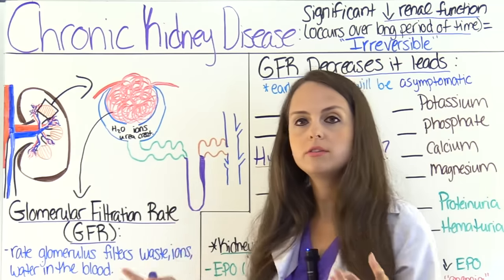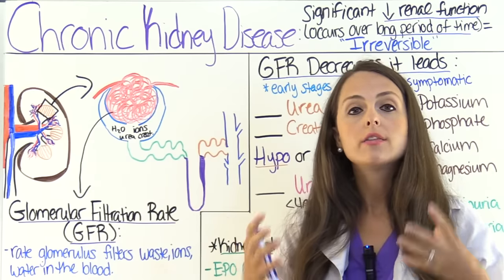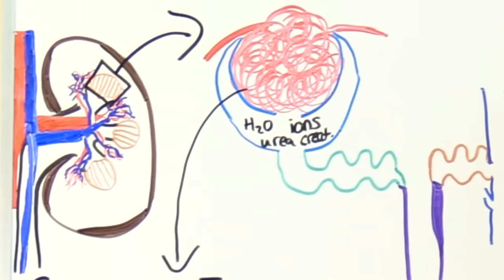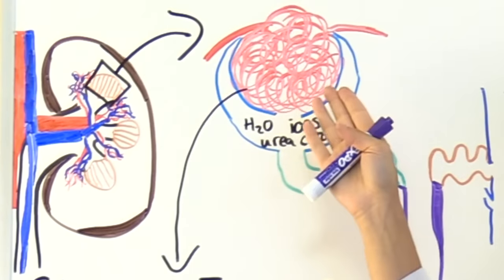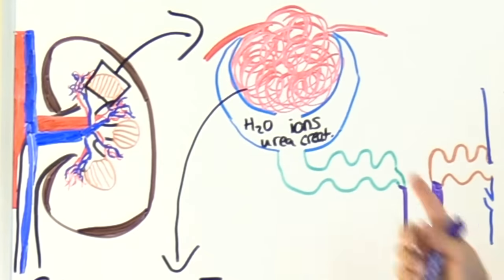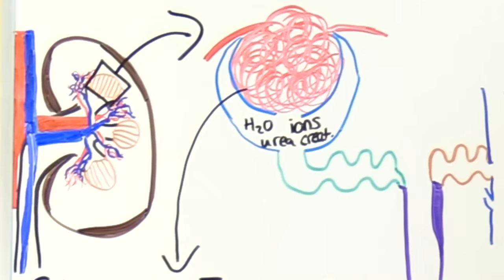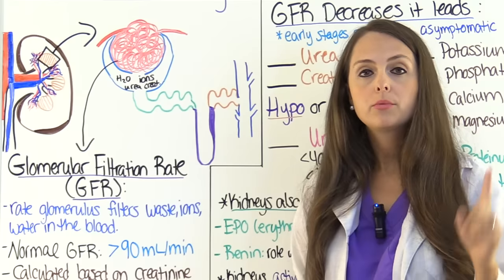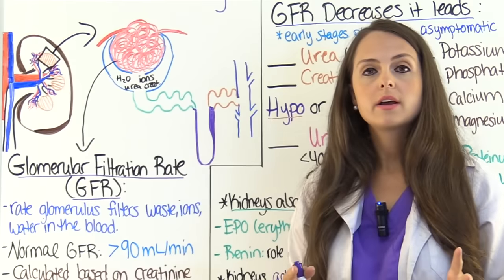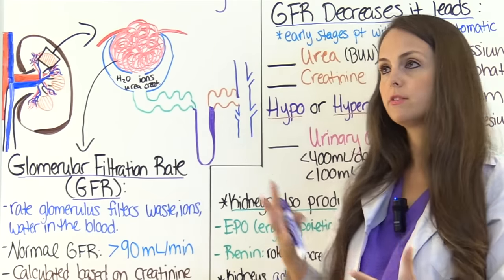The functional unit of your kidney that actually produces urine are the nephrons, and in each kidney you have millions of them. Their whole goal is to filter our blood received from the heart, and the glomerulus is the structure that does that. It filters substances such as water, ions like electrolytes, bicarb, urea, and creatinine, which are waste products. Urea is a waste product from protein breakdown in the liver, and creatinine is a waste product from the breakdown of muscle.